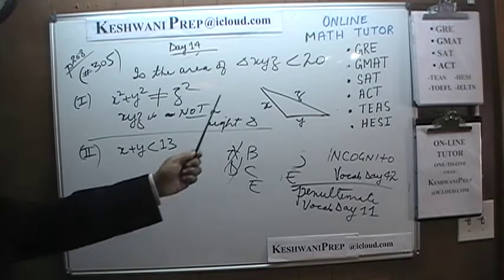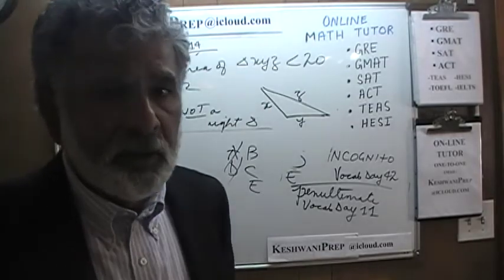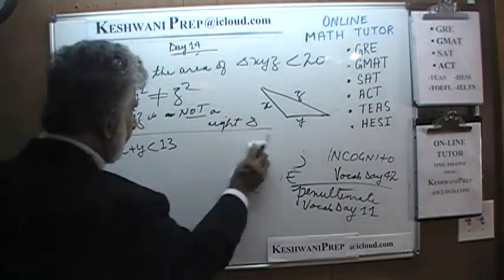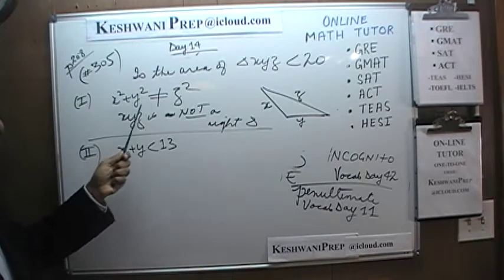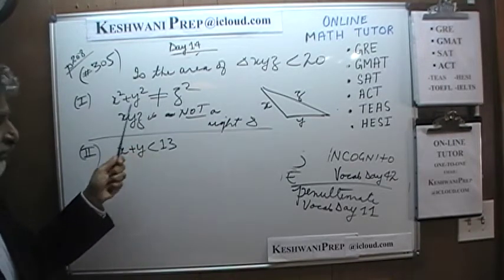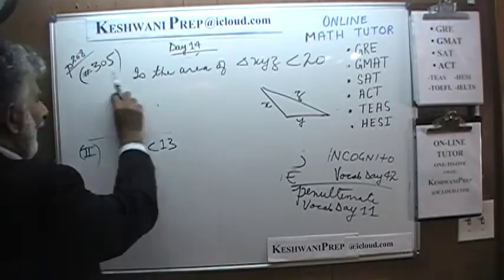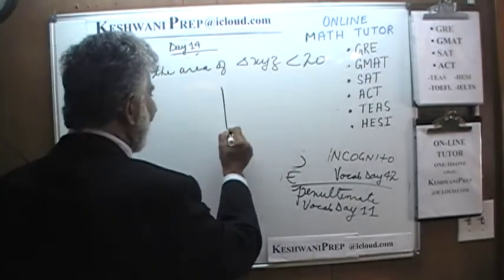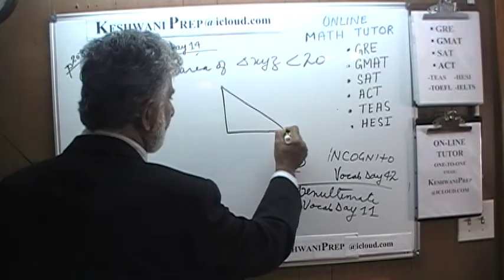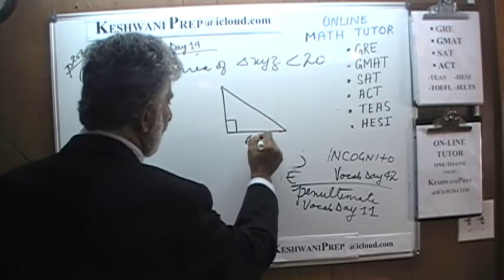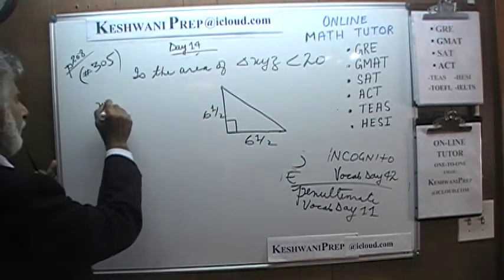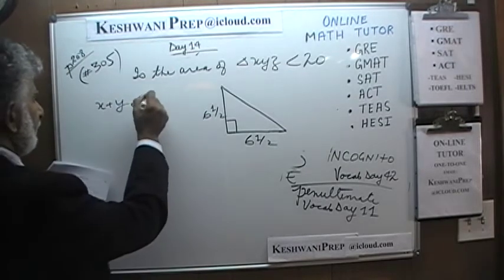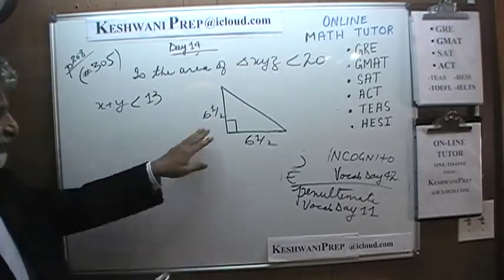In order to answer whether the area is less than 20, let's find the maximum this area can be. To maximize the area of a triangle given two sides summing to less than 13, you make it a right-angle triangle and make both sides equal to 6.5. We know X+Z can't be exactly 13 — we're speaking asymptotically. They can't be exactly 6.5 and 6.5.